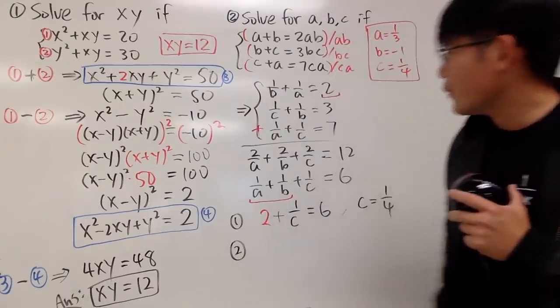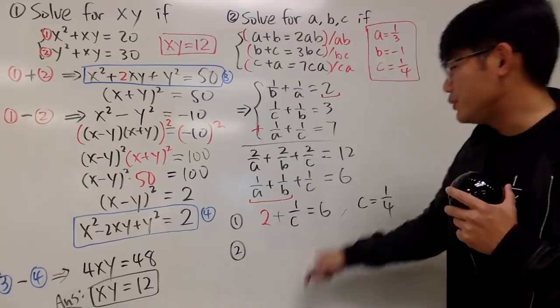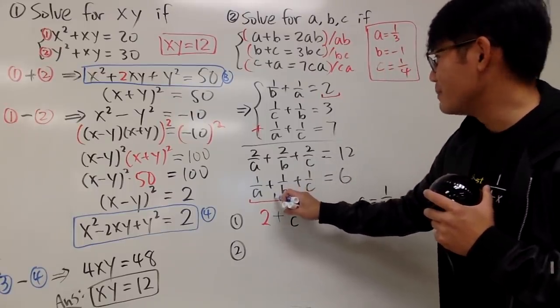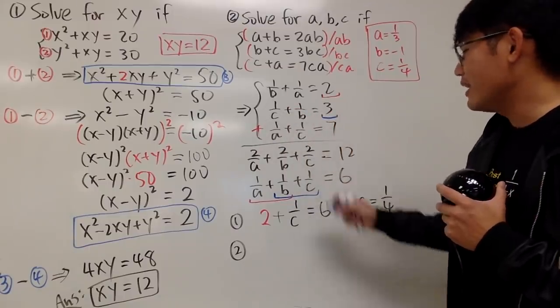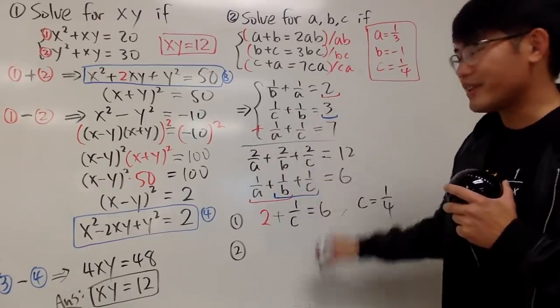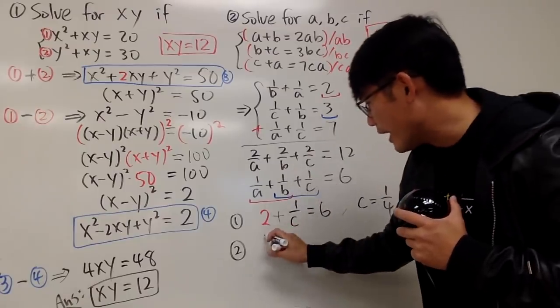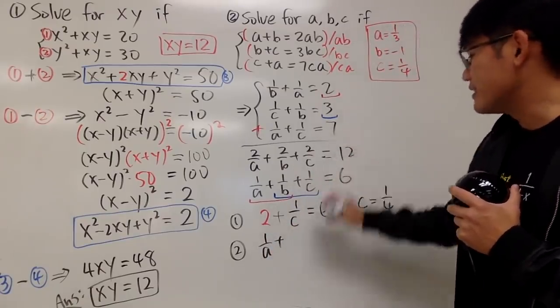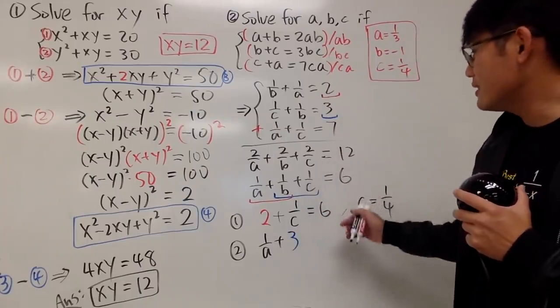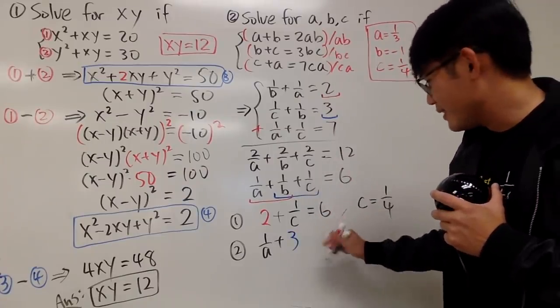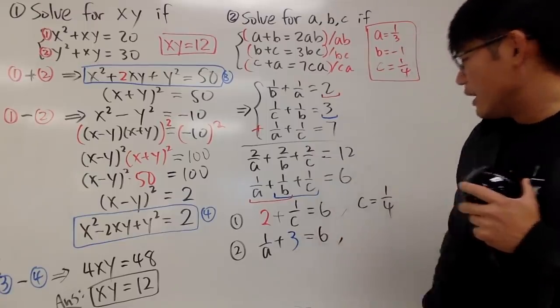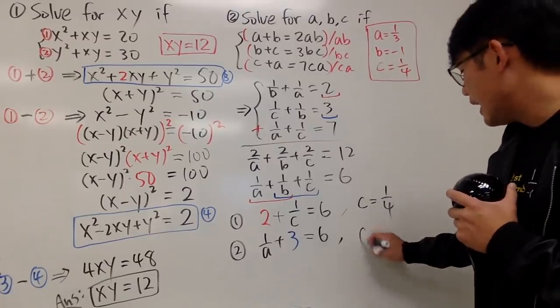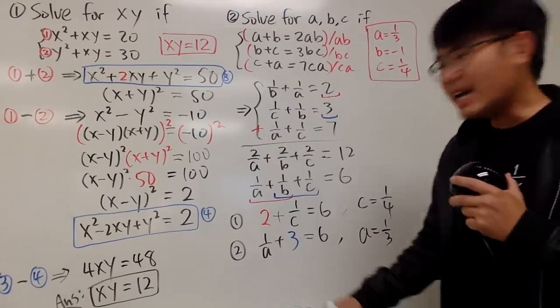Secondly, well, we have 1 over c plus 1 over b equals 3. Congratulations, we do have the 1 over b plus 1 over c. Just this direction. It's okay. So we can plug in the 3 right here. In another word, we get 1 over a plus this right here is just a nice number 3, and this is going to give us the 6 right here. So it's the same style now. And again, minus 3 on both sides, 1 over a is equal to 3, and take the reciprocal on both sides, so we get a equals 1 over 3.